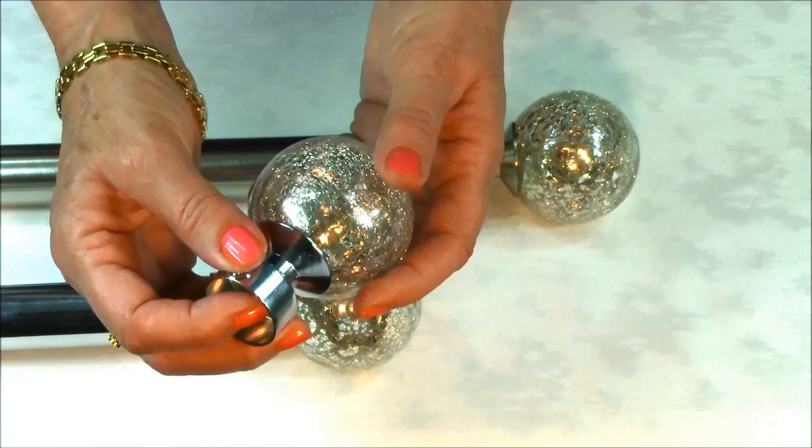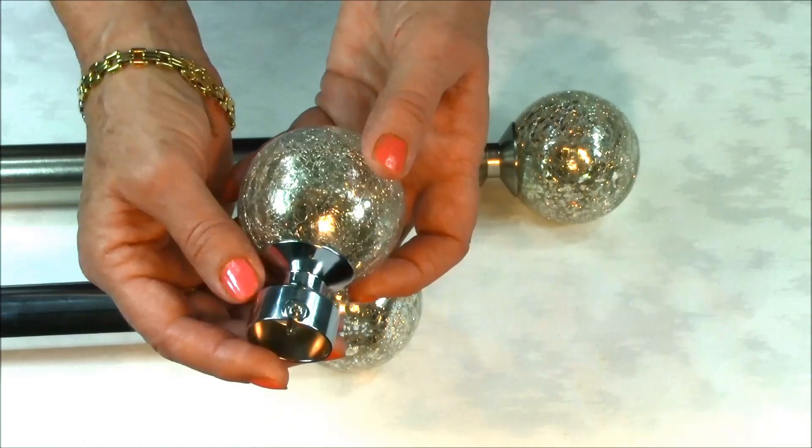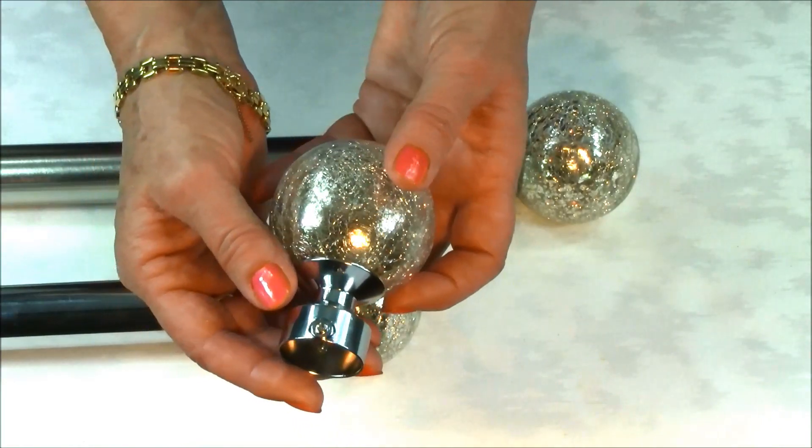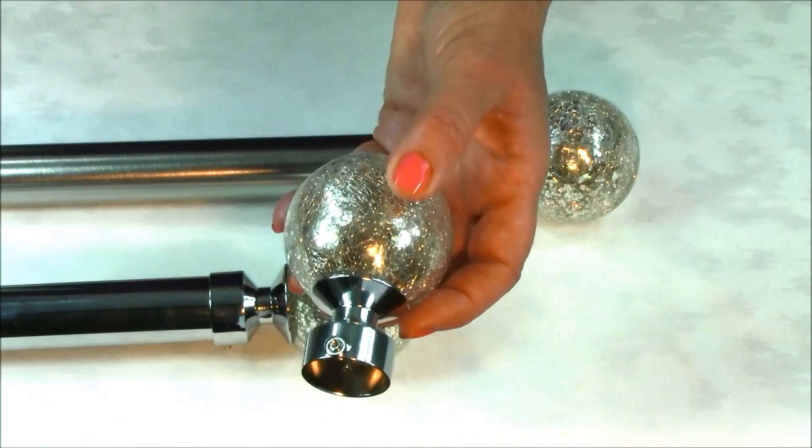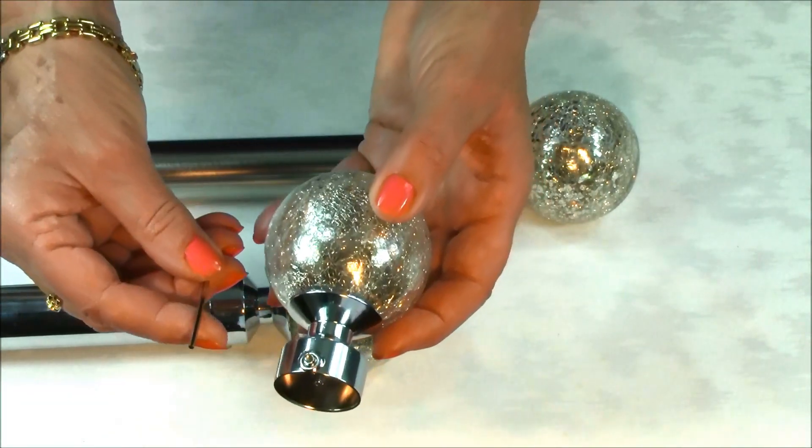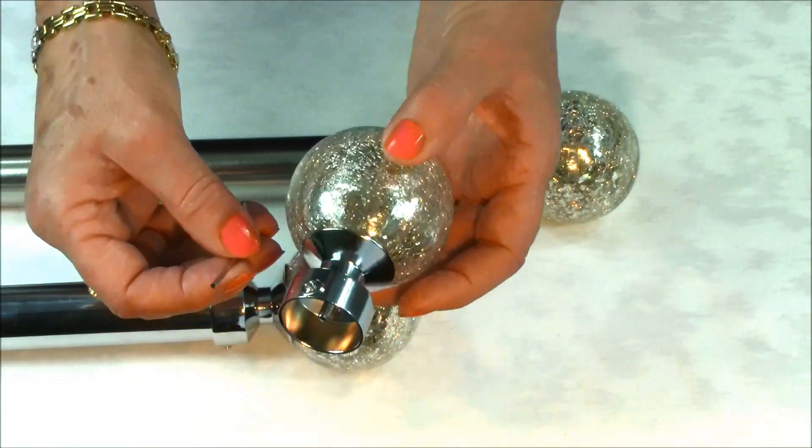The finial is attached to the pole with a metal collar in the relevant metallic finishes and is attached to the pole with a grub screw that's tightened with an allen key, both of which are supplied with the pole.